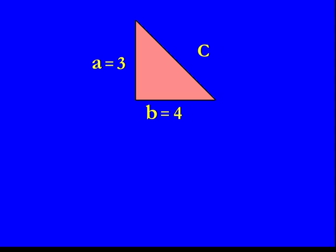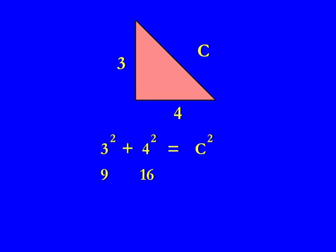The Pythagorean theorem states A squared plus B squared is equal to C squared. So in this case, 3 squared plus 4 squared equals C squared. Well, 3 squared is 9 and 4 squared is 16, so 9 plus 16 is equal to C squared. 9 plus 16 is 25, so 25 is equal to C squared.